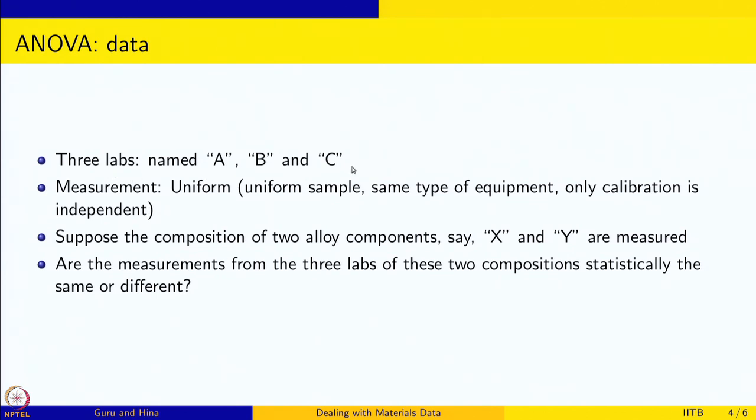The labs are named as A, B, and C. The measurement is uniform - the uniform sample and same type of equipment was used by all three labs, but only their calibration was independent. Each calibrated according to their own standards and then did the measurement. What they measured is the composition of two alloy components, let us call them X and Y. So you have three labs A, B, C and they measured two quantities X and Y. We are trying to see if the measurements of the three labs of these two components X and Y are statistically same or different.